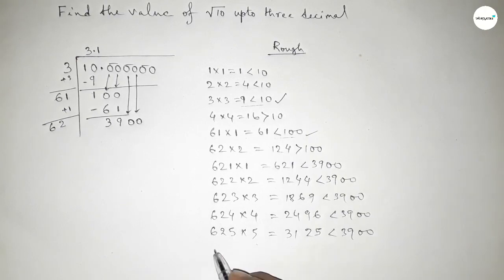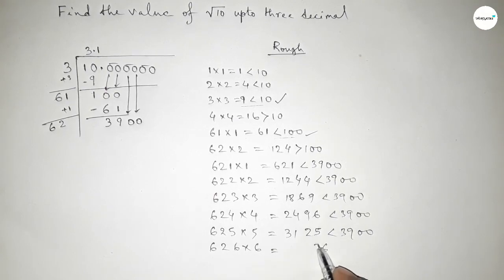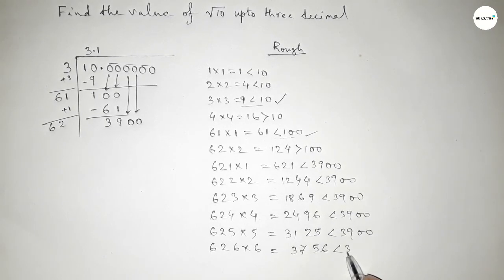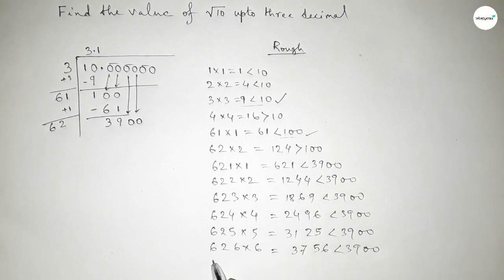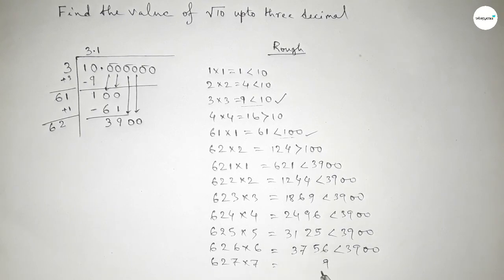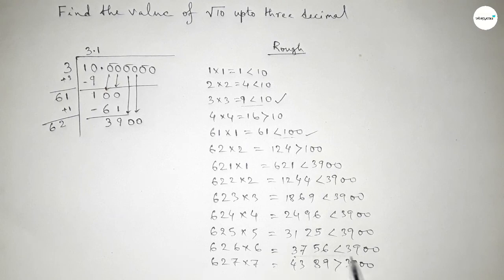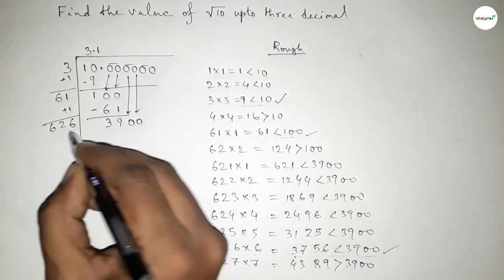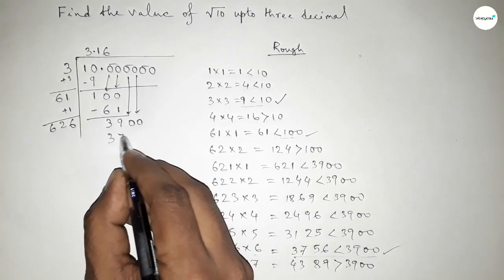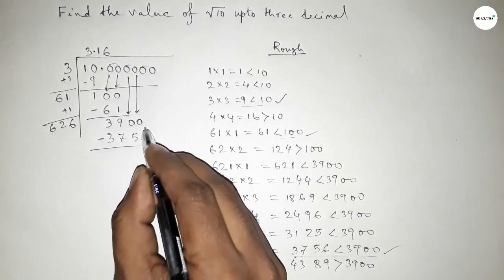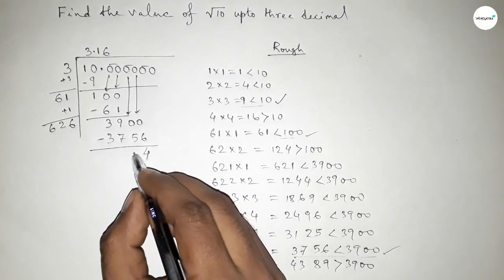If you put 4 and multiply by 4, that is less than 3900. If you put 5 and multiply by 5, also less than 3900 but not near it. If you put 6 and multiply by 6, that is near 3900. If you put 7 and multiply by 7, that is greater than 3900. So we should take 6.